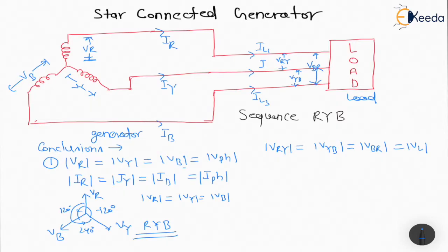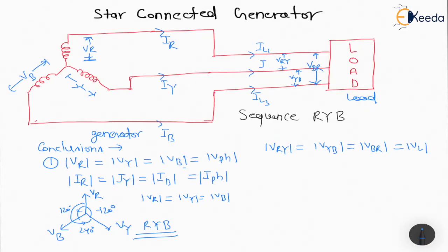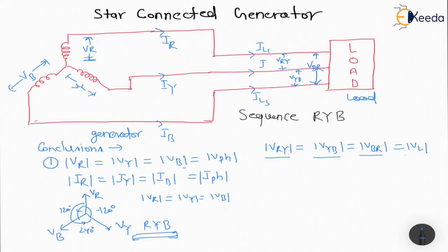What is the meaning of sequence? If the sequence is RYB, then R attains its maximum first, then Y attains its maximum, then B attains its maximum, and then the cycle repeats: R, Y, B again. So this is the three-phase system and three-phase generator. |Vry| = |Vyb| = |Vbr| = Vl.